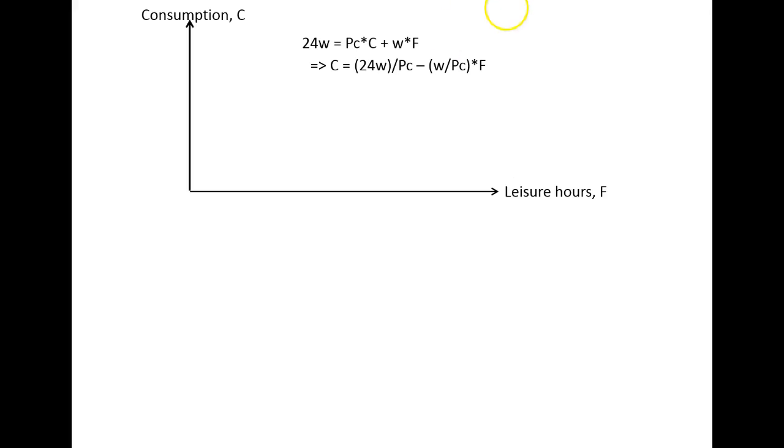We will have the vertical intercept here, 24 times W divided by the price of consumption, minus the relative price, which is the wage rate divided by the price of consumption. We have a maximum of 24 hours per day to use, which then will be the horizontal intercept.